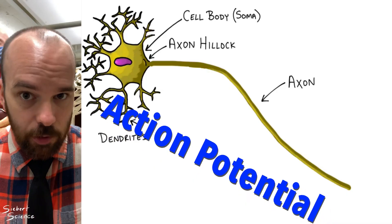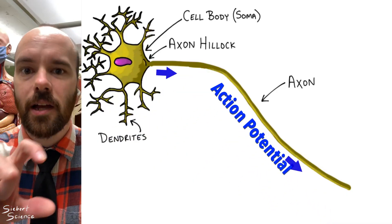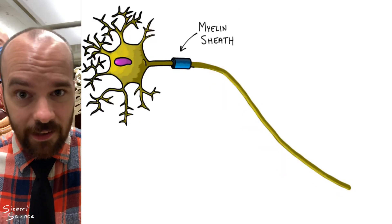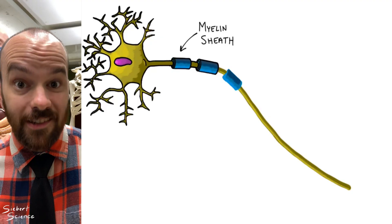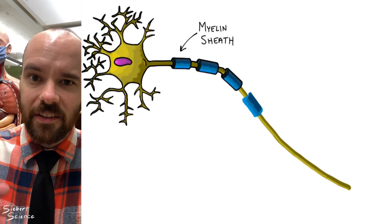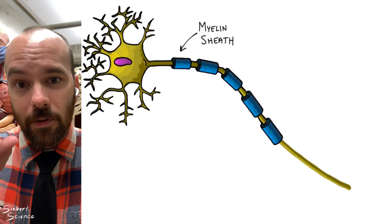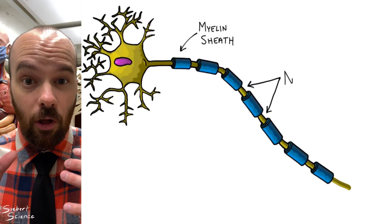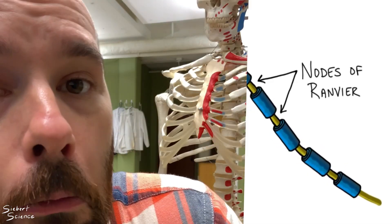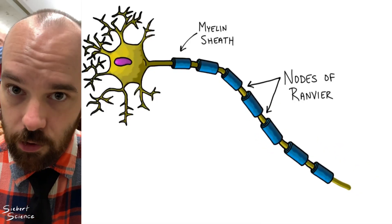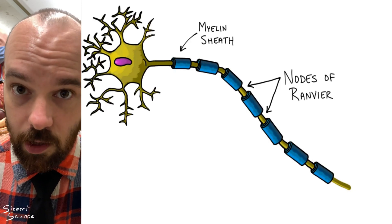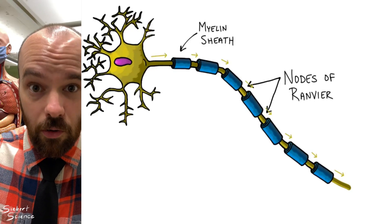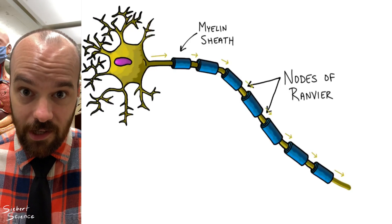For now, just know that an action potential is the signal a neuron can send. Specialized cells form a myelin sheath that wraps around the axon to insulate it, allowing the action potential to skip between little open sections called the nodes of Ranvier. By allowing the signal to jump from node to node along the axon, it speeds up the action potential up to 10 times faster than it otherwise would be.